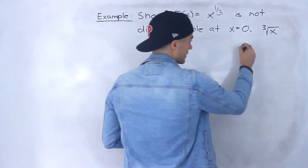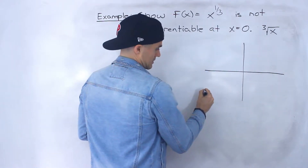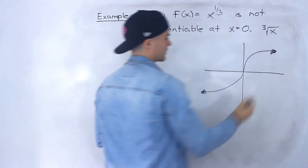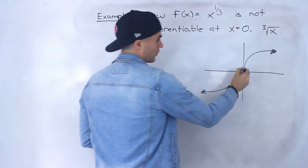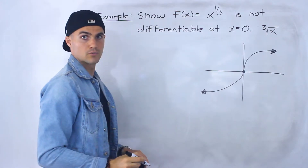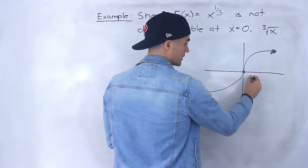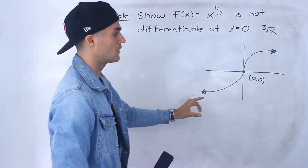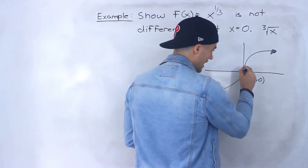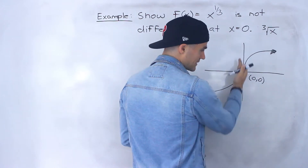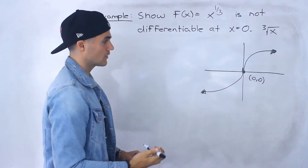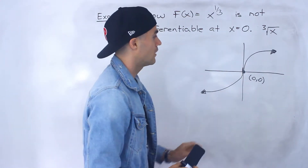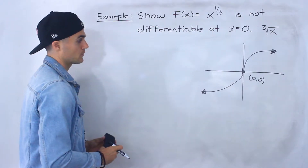The way this function looks graphically, it kind of looks like that. What we have to show is that this function is not differentiable at x = 0. Notice this function is continuous at x = 0 — it contains the point (0, 0), and plugging in 0 for x gives a y-value of 0. So it's continuous there, but we have to show it's not differentiable. If you look at the graph, you can tell the slope of the tangent here is going to be vertical.